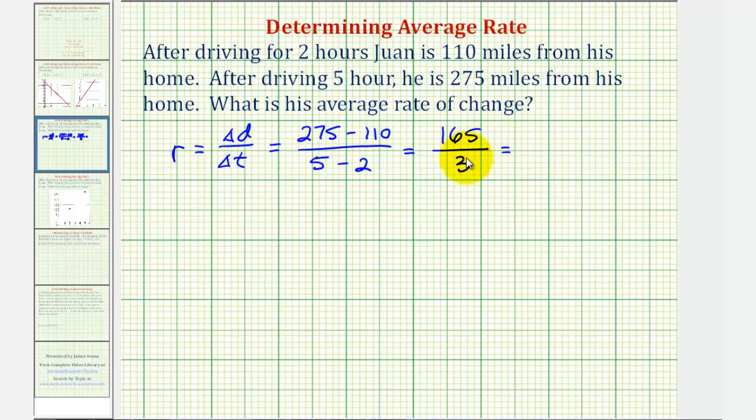165 divided by three equals 55. Let's leave this in fraction form. So we'll write 55 over one. This represents 55 miles.